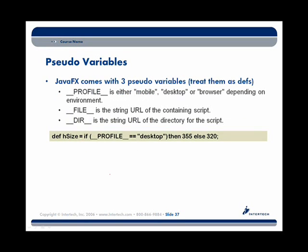JavaFX also comes with three pseudo variables — built-in variables that give information about the environment in which our JavaFX script is running. _profile_ tells us what type of environment we're running in: mobile, desktop, or browser — useful for determining UI capabilities like screen height and width. _file_ and _directory_ give us information about where we're running from: the actual script file name being run and the directory it's running from.